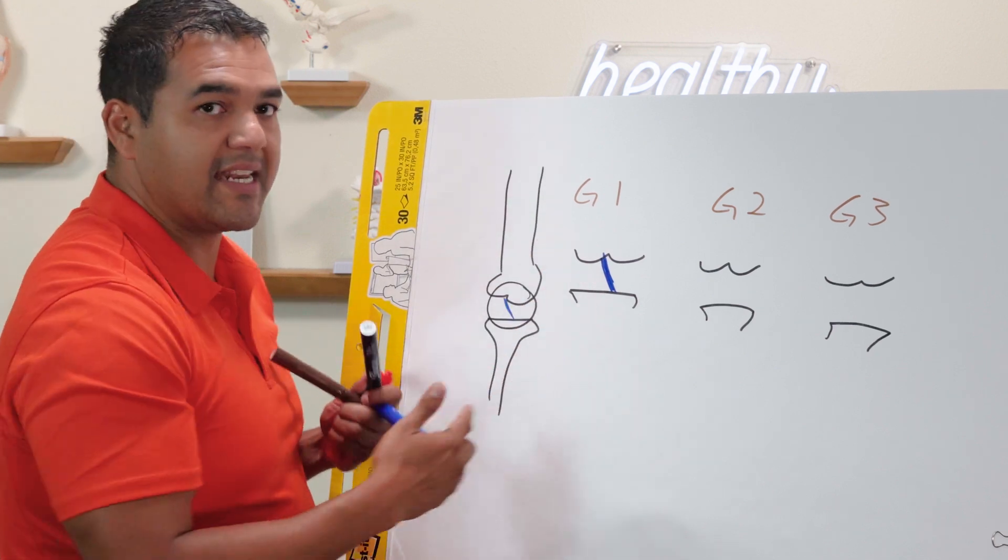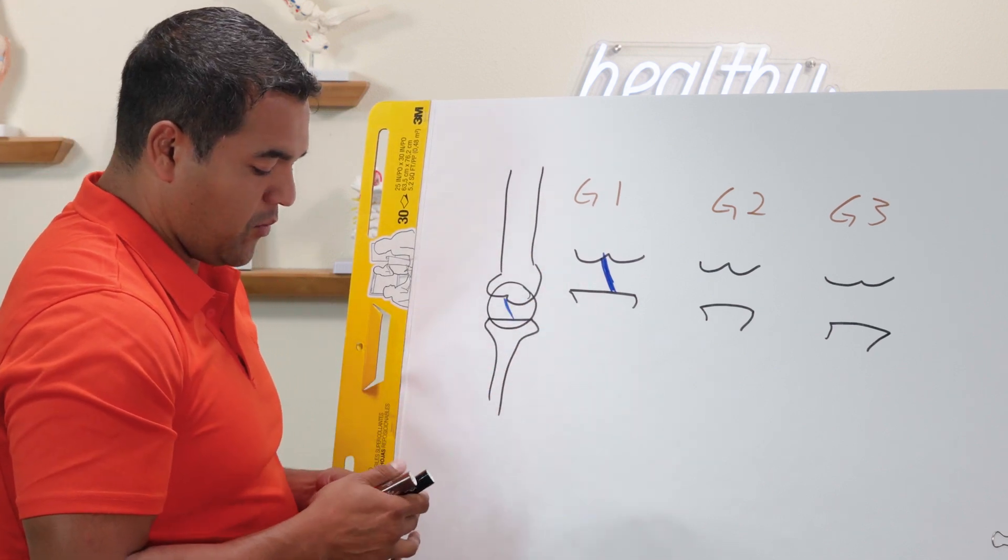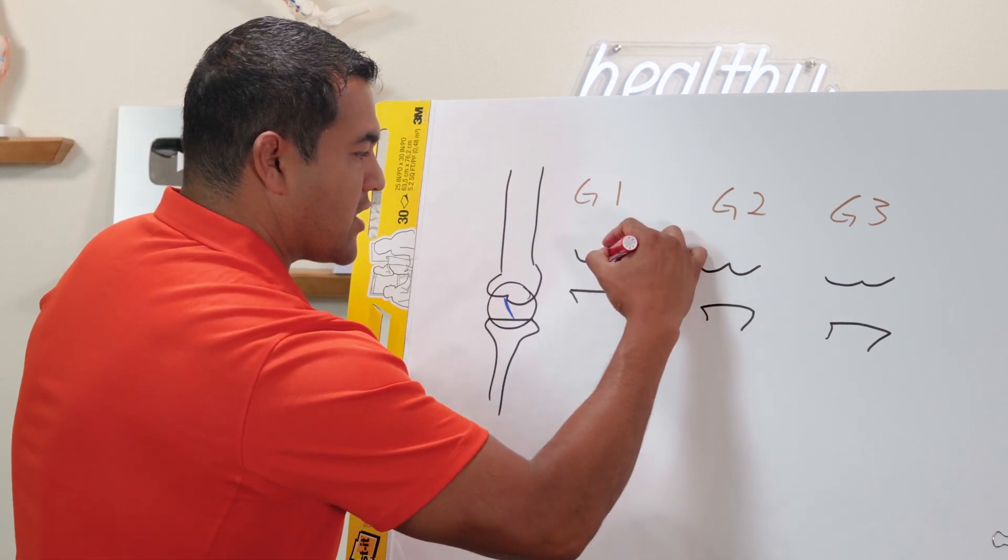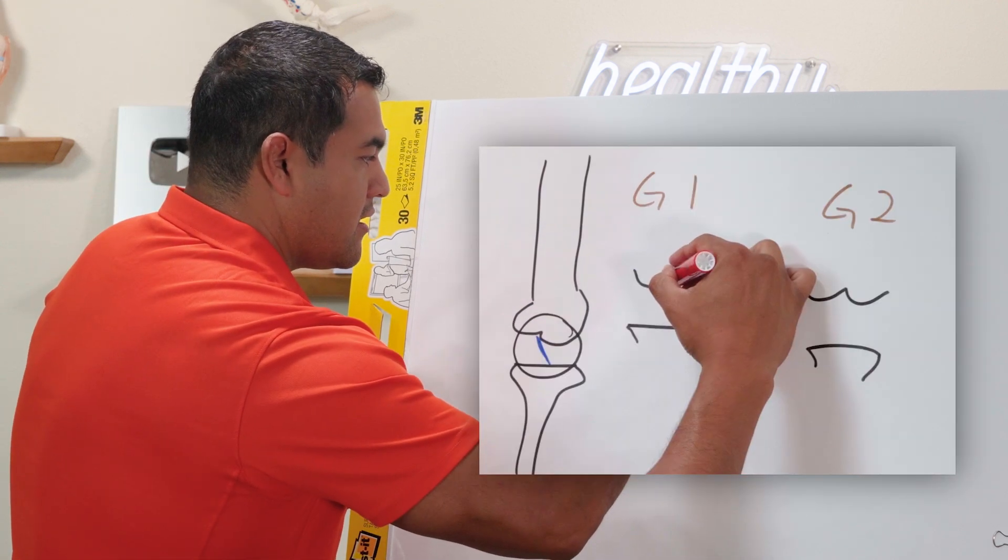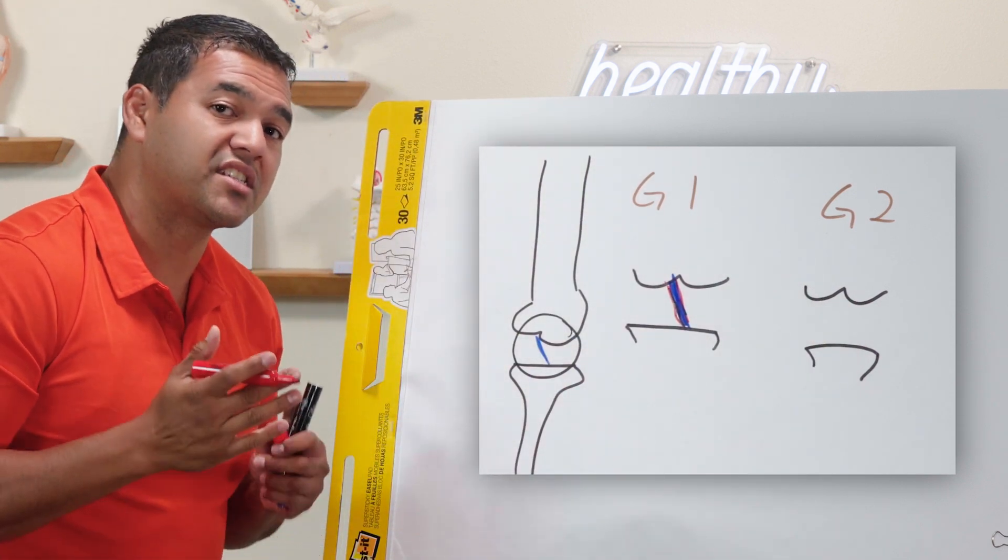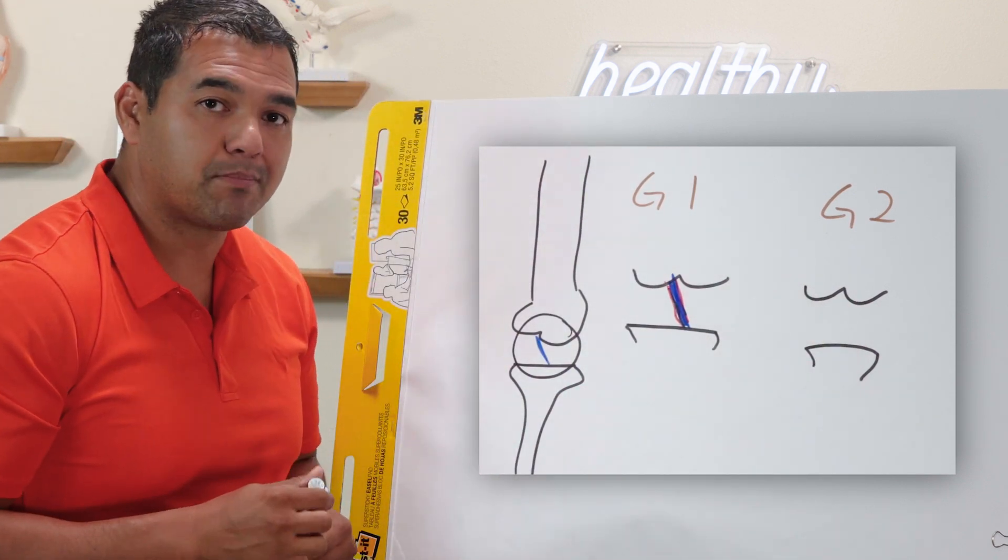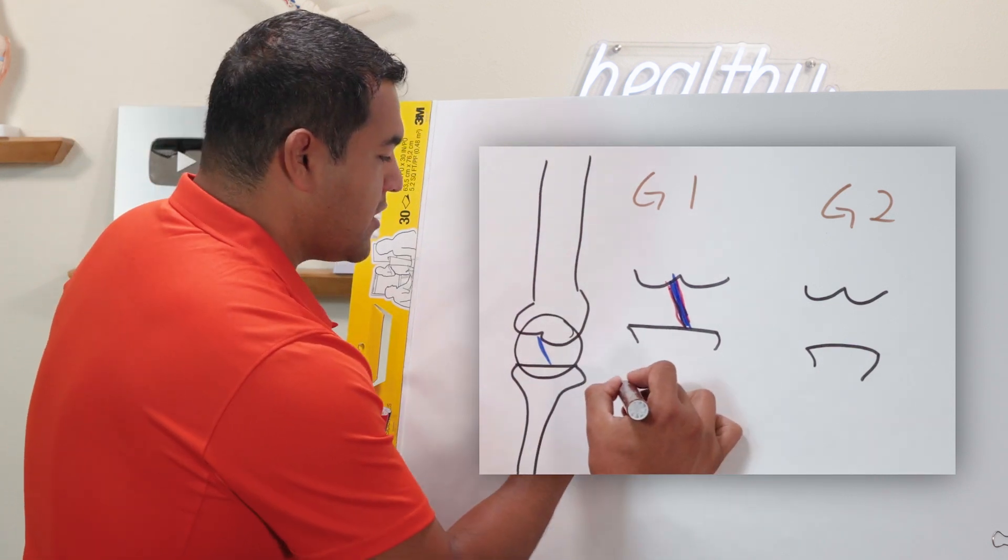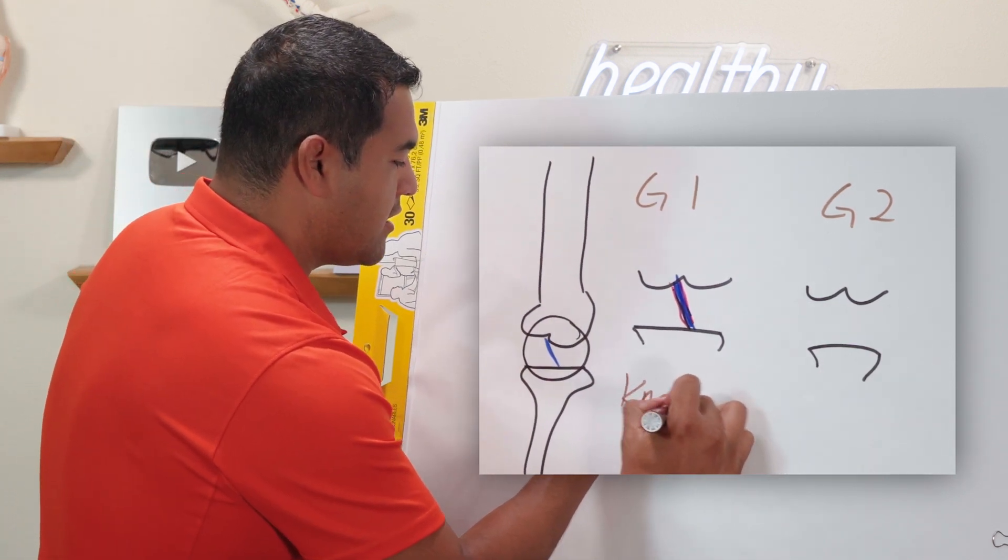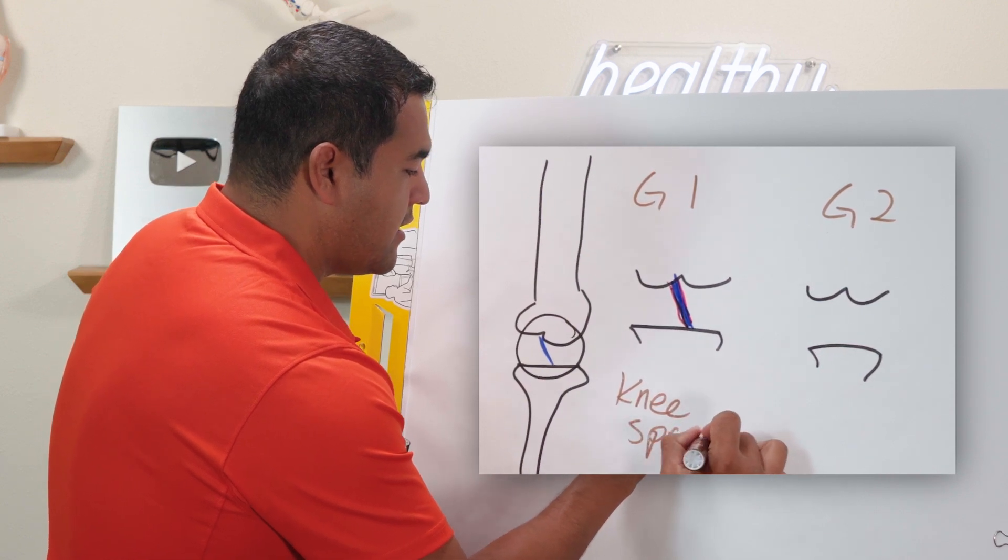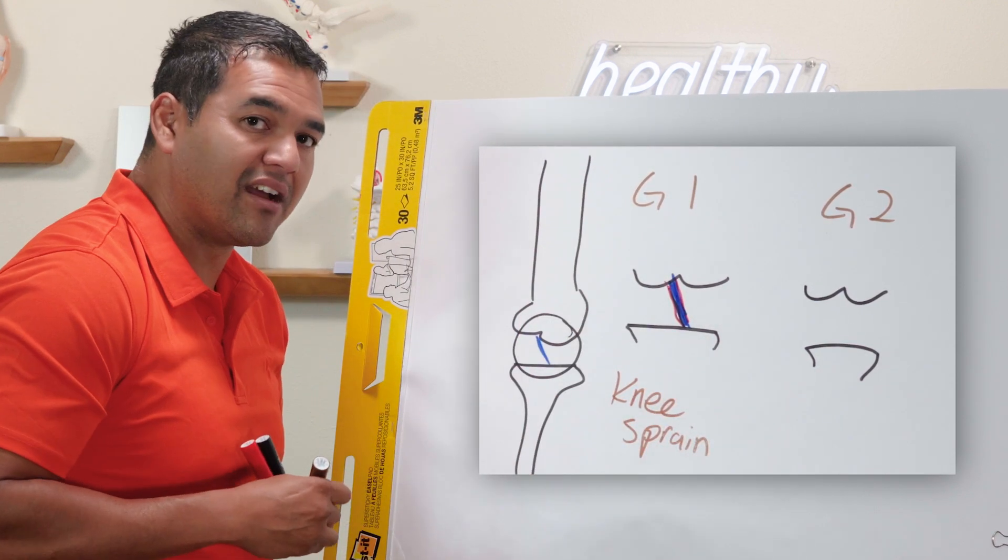Now in grade one it's still connected, but what they're determining is it's stretched. I'm just going to draw a red line around it. It's not torn, it's just stretched. This would be the equivalent of a sprain in your knee. So this is like if you ever see sports they'll say they have a knee sprain. That's pretty much what a grade one ACL injury is.